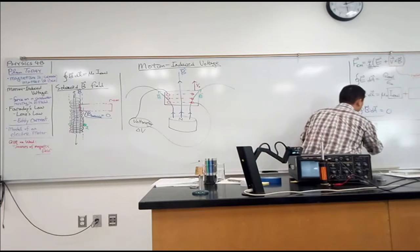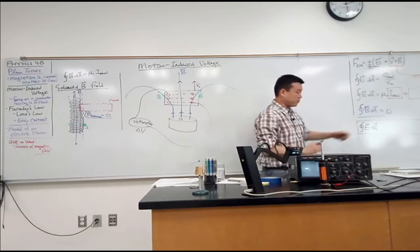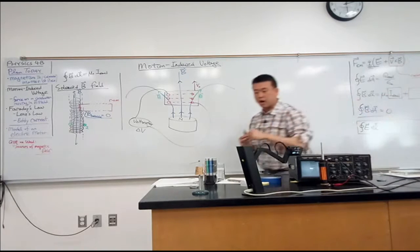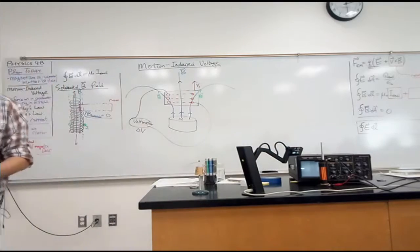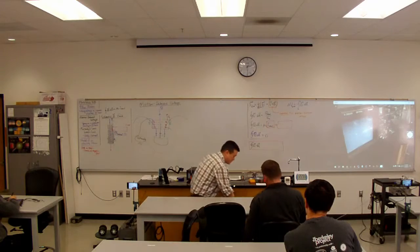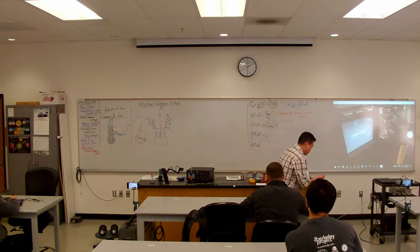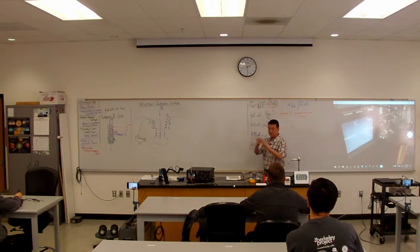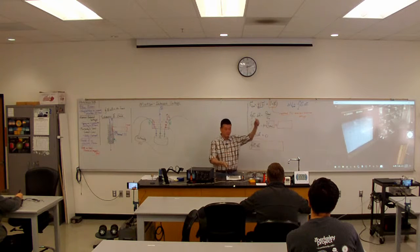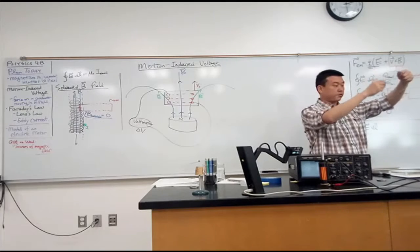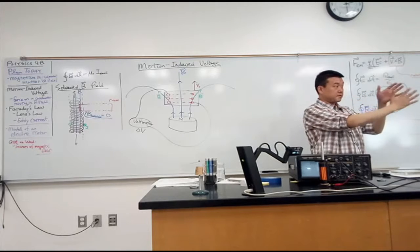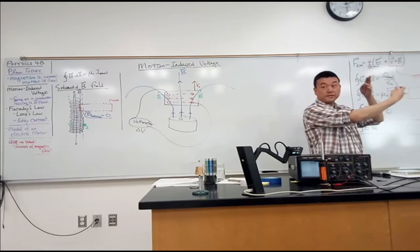And this line integral is around the closed loop. So do you guys remember what kind of geometric object a closed loop also defines? Like if you have a closed loop, you have one other geometric object from this. Surface that's enclosed by this loop, right?